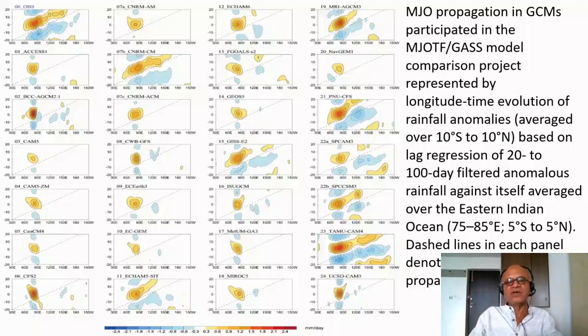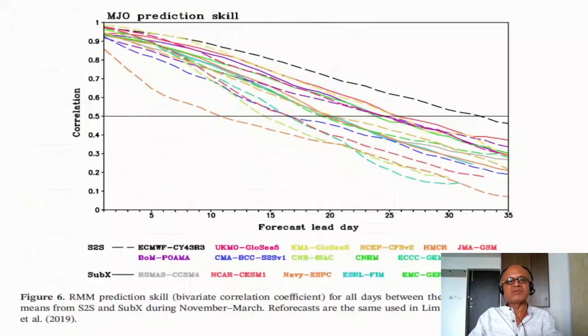There are lots of other details about convective parametrizations being modified with convective momentum transport, dilute plume approximations and so on. One of the key ingredients that we already looked at before when we looked at CMIP-6, CMIP-5 comparisons was the zonal and meridional gradients of moisture. The gradients of moisture seem to be very critical for accurate simulations and predictions of MJOs.